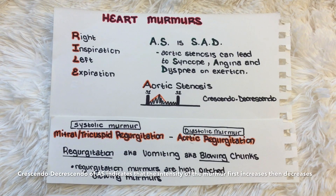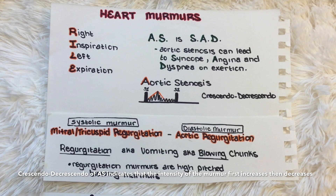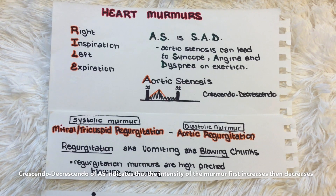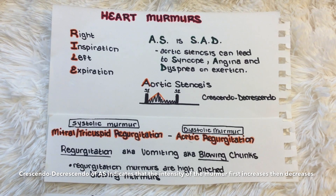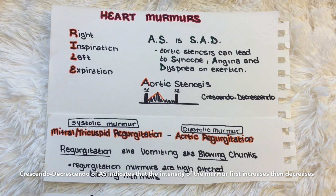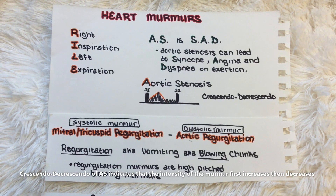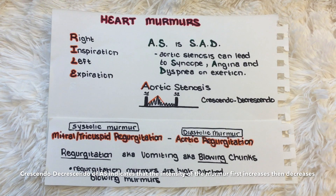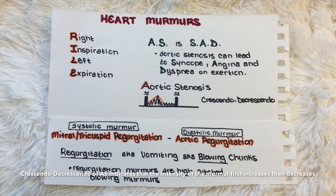For this next mnemonic, note there's a typo — there should be a D in front of A-S, so it reads D-A-S is S-A-D; they're mirror images of each other. The mnemonic is: Damn, Aortic Stenosis is SAD. This helps you remember that complications of severe aortic stenosis include Syncope (particularly on exertion), Angina, and Dyspnea on exertion.